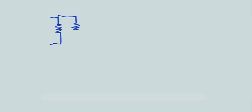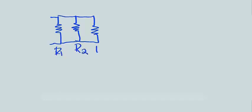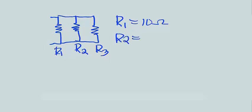Another example: three resistors connected in parallel having unequal values — R1, R2, and R3. R1 is equal to 10 ohms, R2 is equal to 5 ohms, and R3 is equal to 2 ohms.